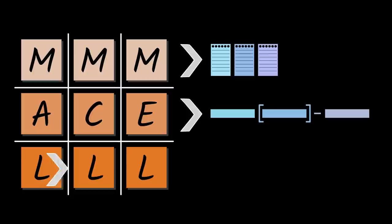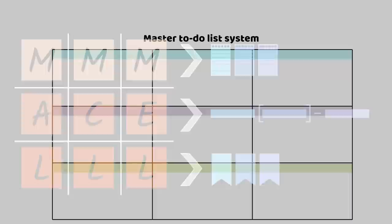The MMM acronym explains how to sort your to-dos. The ACE acronym explains how to write your to-dos. And the LLL acronym explains how to label and filter your to-dos.